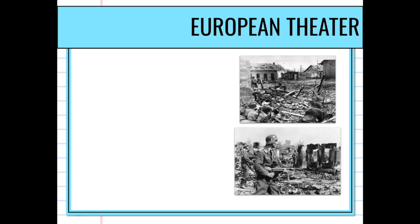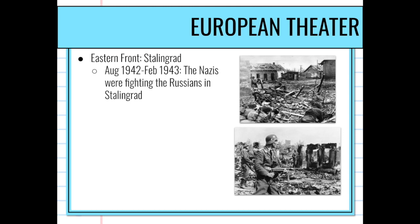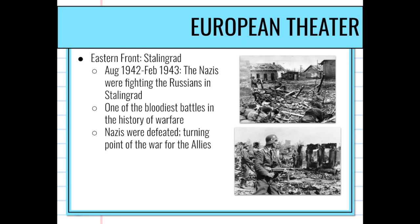With North Africa secured, the Allies invade through Sicily and up into Italy, since Mussolini had been conquering in Africa. By the mid-1940s Mussolini is overthrown and killed. The war in Europe is then fought on two fronts: the Eastern Front from the Soviet Union perspective, and the Western Front. The biggest battle on the Eastern Front was the Battle of Stalingrad, August 1942 to February 1943 — one of the bloodiest battles in the history of warfare. The Russians defeat the Nazis there, marking a huge turning point for the Allies.